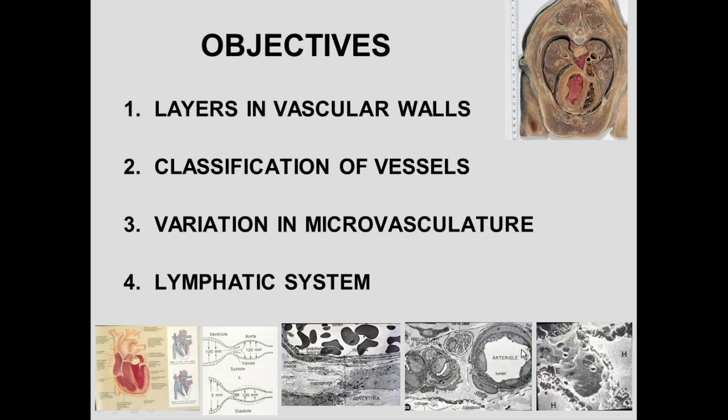Today we're going to talk about the blood and lymph vascular system. We want to look at the layers of the vascular wall and what are the components in the wall. We want to learn how to classify different vessels — arteries, veins, capillaries — and then look at variation in the microvasculature, and then end up by looking at the lymphatic system.